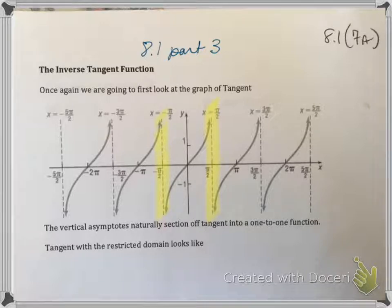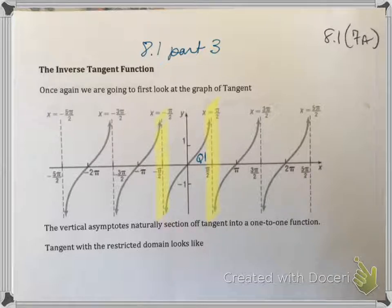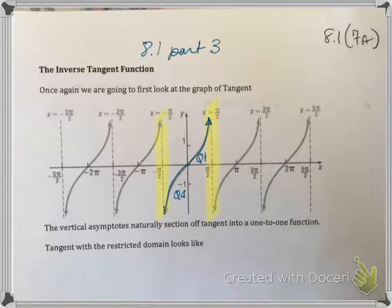Remember with the restriction, we have to have one quadrant where inverse tangent is positive and one quadrant where it's negative. Quadrant 1 has all values above the x-axis, so they're positive. And in quadrant 4 on the other side, they're below the x-axis, so their quantities are negative.